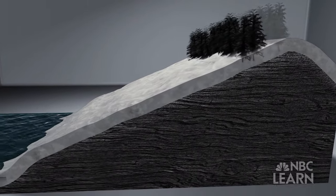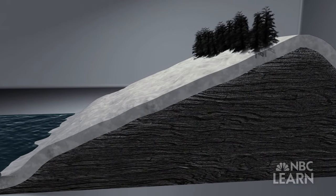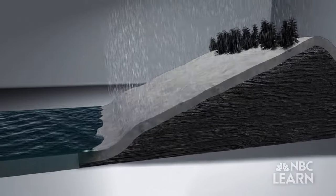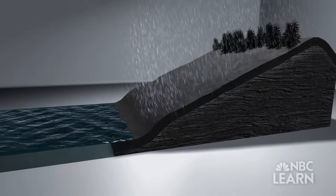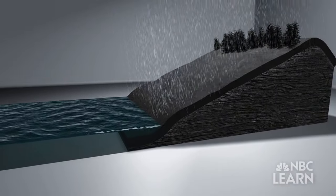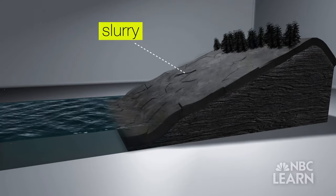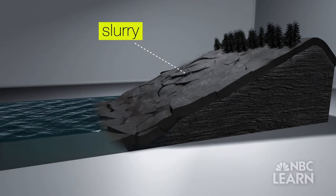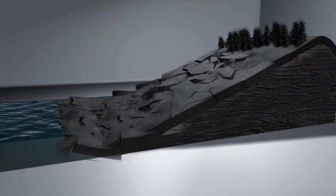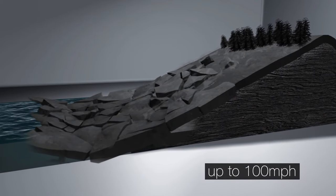Landslides occur when materials such as debris, rock, and soil become dislodged from the Earth due to events like excessive rain or earthquakes. The displaced material forms something called slurry, a semi-liquid material that flows downward, sometimes reaching speeds up to 100 miles per hour.